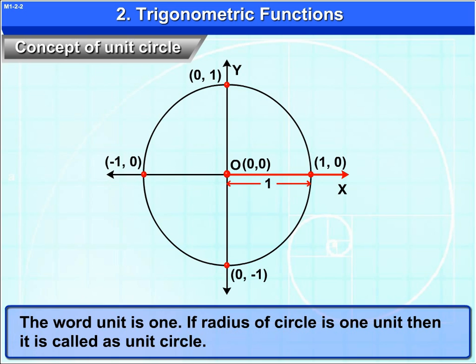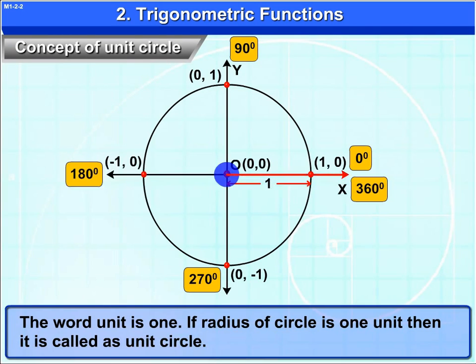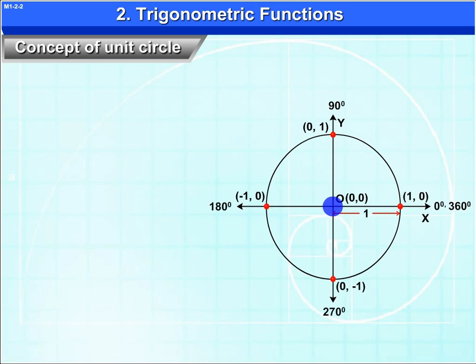Now, let us start from this point. It is 0 degrees. So this one is 90 degrees. This is 180 degrees. This is 270 degrees. And again, after reaching the initial point, it is 360 degrees. These values are in degrees.